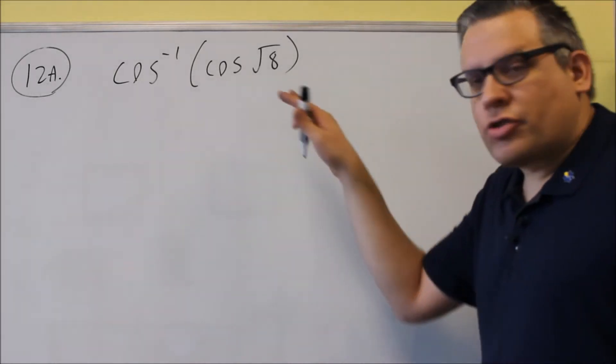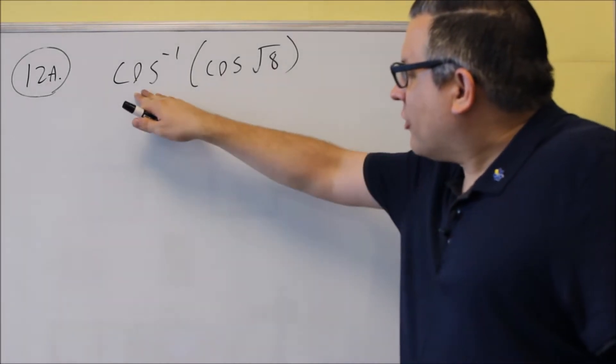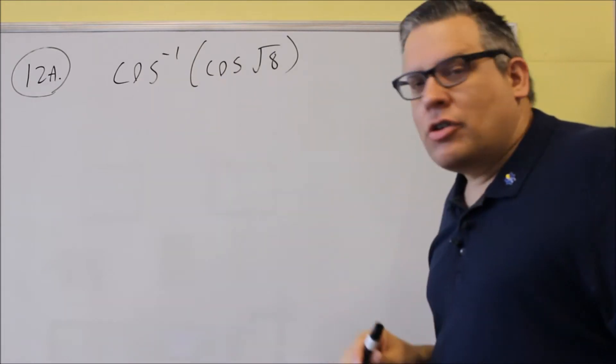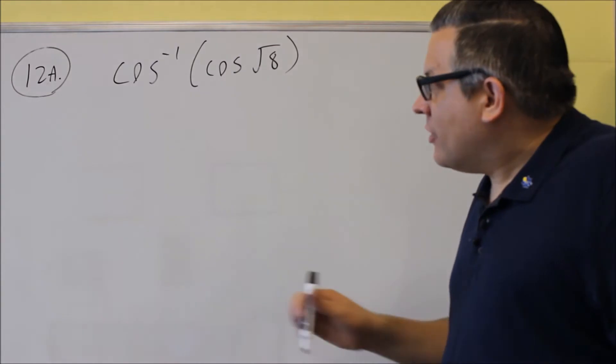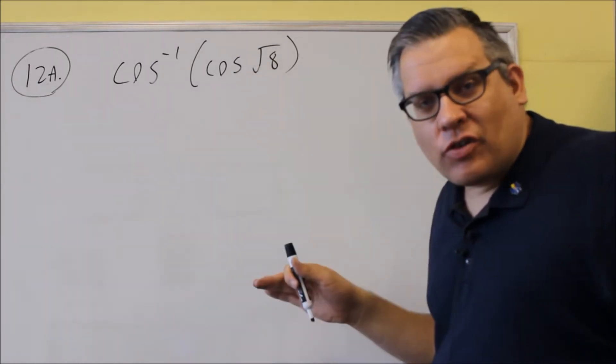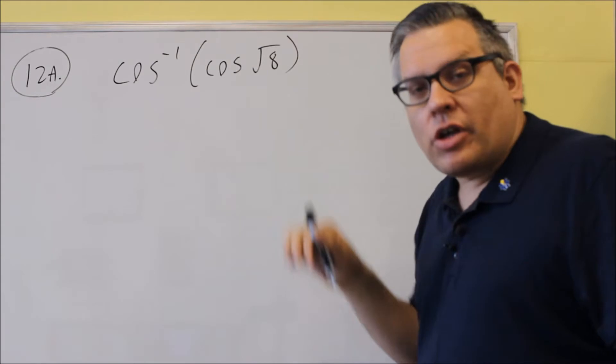Number 12 involves inverse trig functions. We have inverse cosine of cosine of square root of 8. What you want to look at is there are some rules we talked about in the section on inverses that talk about whether or not you can cancel this.